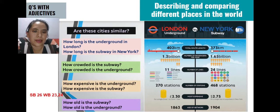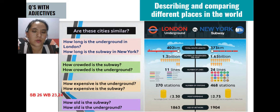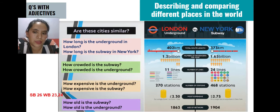I am starting with the first characteristic: the total route length. My question is 'how long?' — I am adding the adjective. How long is the Underground in London? And how long is the subway in New York? The longest is the Underground in London, because it covers 402 kilometers, while in New York it is 373 kilometers.